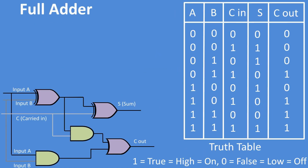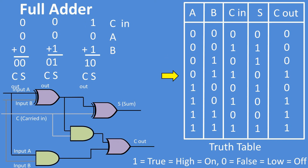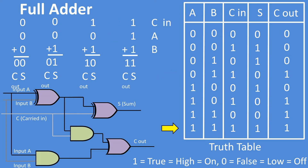The full adder is doing the same thing. If there is a carry from a previous digit, it is added to the A and B input to result in a sum digit and a carry out digit. I have listed on this slide a truth table that goes over every variation of a two-variable full adder. Carry in of zero plus A of zero plus B of zero equals carry out zero and sum zero. Carry in of zero plus A of zero plus B of one equals carry out zero and sum one. Carry in of one plus A of zero plus B of one equals carry out one and sum zero. Carry in of one plus A of one plus B of one equals carry out one and sum one.